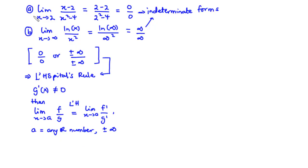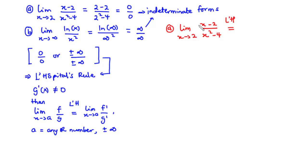Using L'Hôpital's rule, let's find the actual limit for example (a): the limit as x approaches 2 of (x minus 2) divided by (x squared minus 4). Since direct substitution gave 0 over 0, we differentiate the numerator and denominator separately. The derivative of the numerator is 1, and the derivative of the denominator is 2x. Substituting x = 2 gives 1 over (2 times 2), which equals 1 over 4.